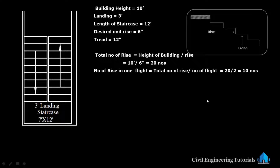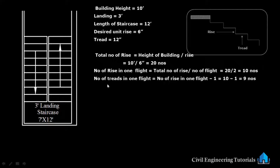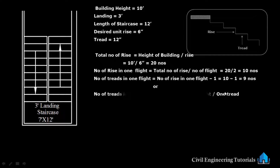Number of treads in one flight equals number of rises in one flight minus 1. So 10 minus 1 equals 9 numbers. See: 1, 2, 3, 4, 5, 6, 7, 8, 9. Don't consider the landing as a tread — the landing is separate.